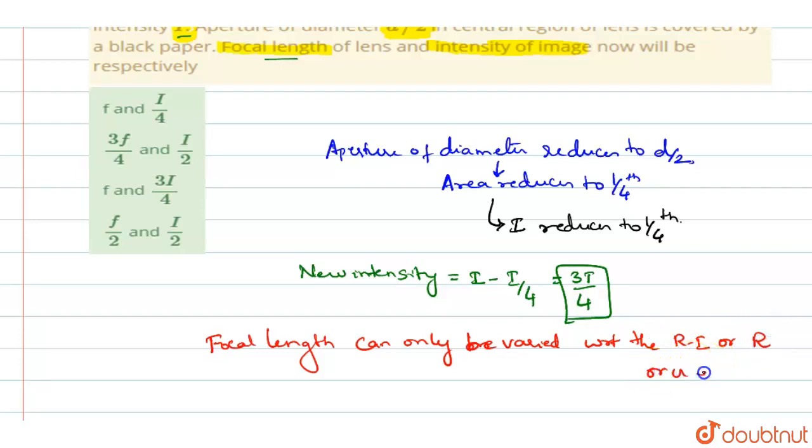It is independent of the aperture. So you can say that focal length remains same, it will not vary, whatever may be the size of the aperture. Focal length remains same.